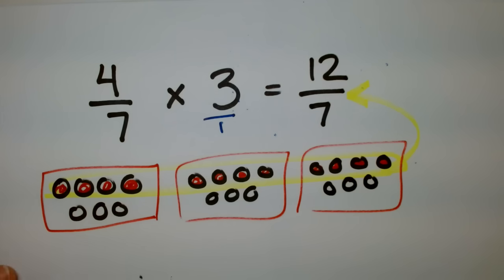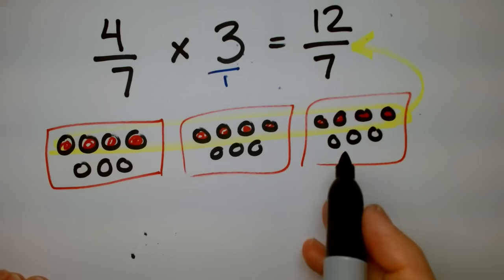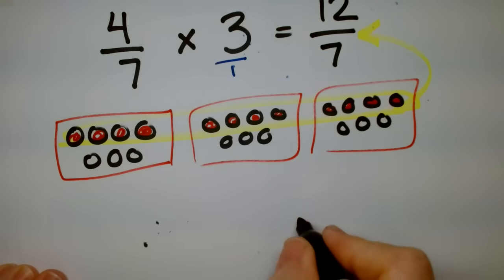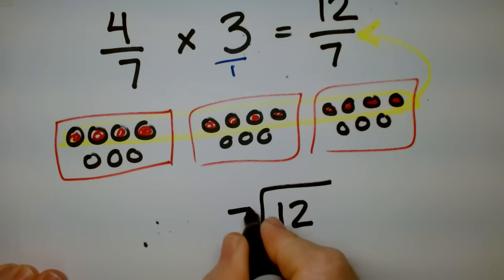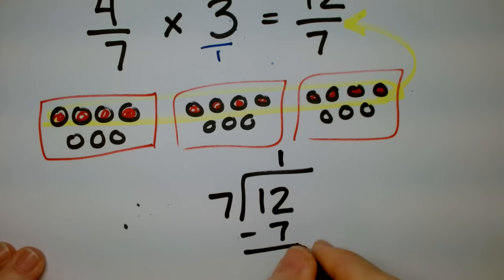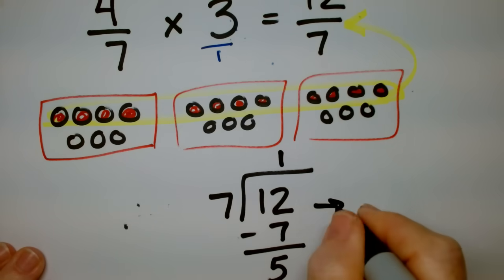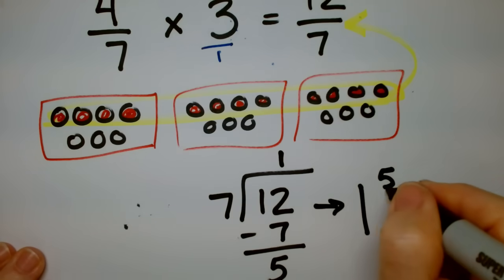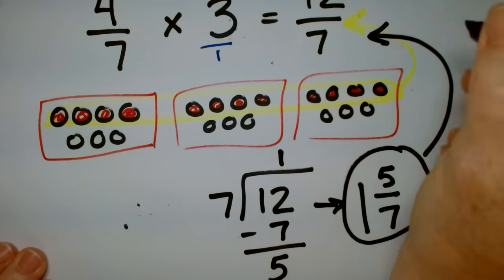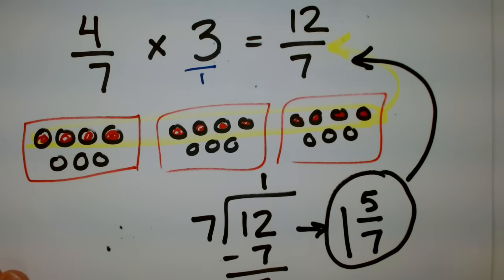So keeping this in mind, we have 12 over 7. How do we make this a mixed number? Do you remember? We put the 12 here and the 7 there. 7 goes into 12 one time. Minus 7, we have 5 left over. So this is 1 and 5 sevenths. So this is the same number. These two are equal to each other.